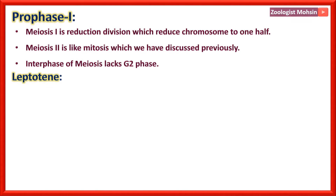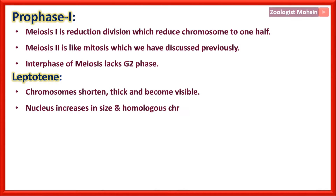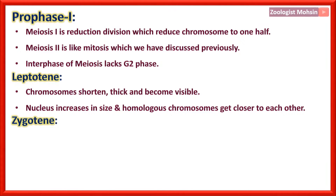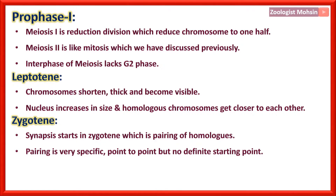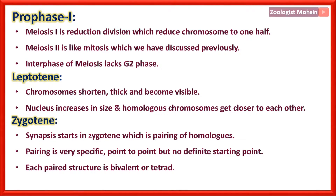The first stage of Prophase 1 is Leptotene: chromosomes shorten, become thick and more visible, nucleus increases in size, and homologous chromosomes get closer to each other. The second stage is Zygotene: synapsis starts, which is the pairing of homologous chromosomes. Pairing is very specific point-to-point but with no definite starting point — it can start randomly. Each paired structure is called a bivalent (two chromosomes) or tetrad (four chromatids).